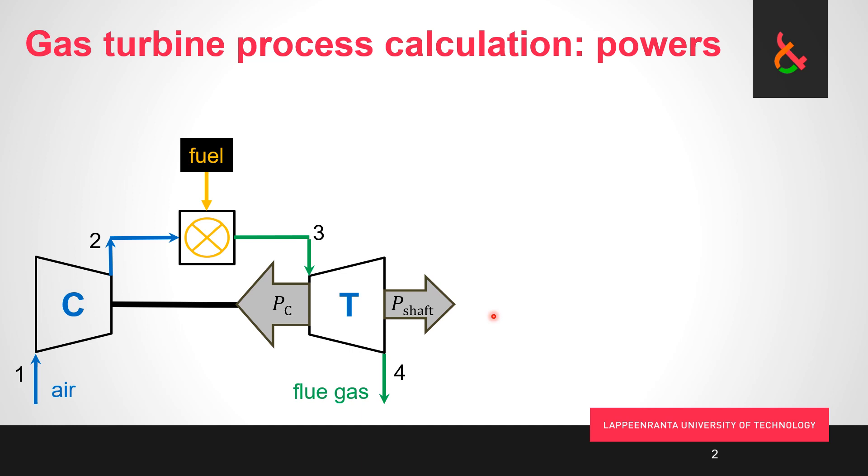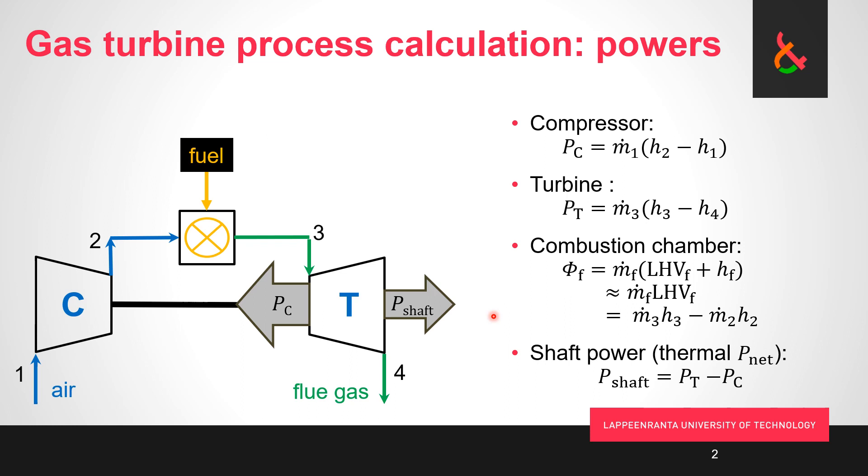Only after certain losses we get the net electrical power out. We need to be able to calculate a couple of balances for these components. Luckily we have a lot simpler process than the steam power plant, so there's only three basic components.